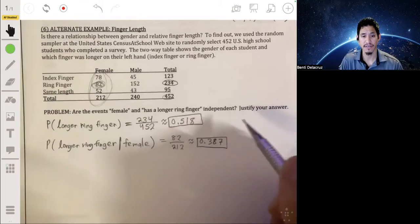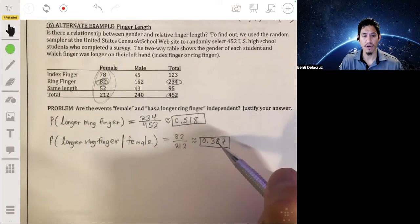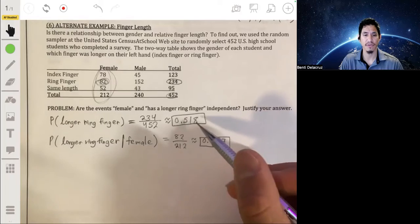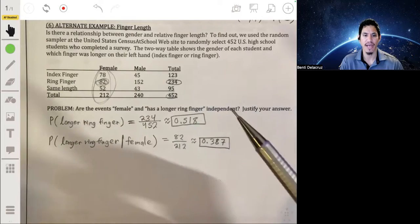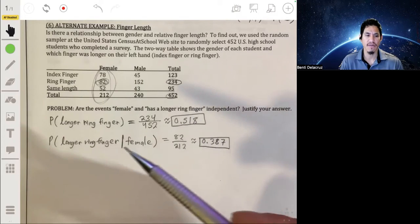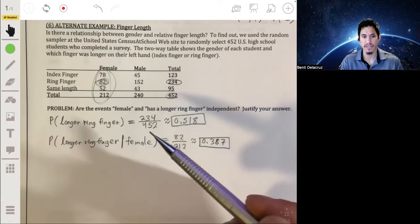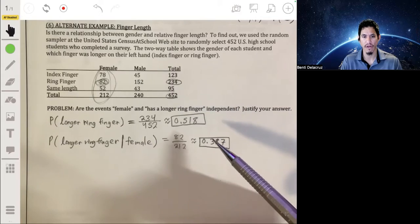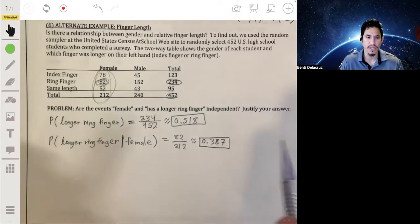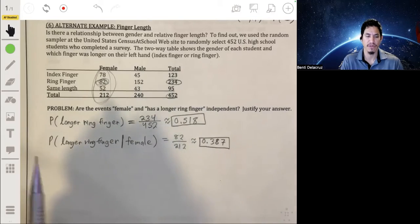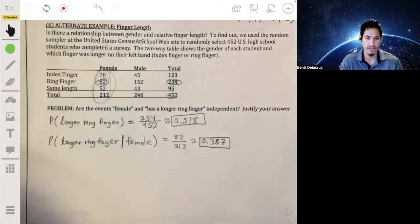Okay, so you can see there's about a 12, 13% difference between these two probabilities. So then we can say that these are not independent because it does appear that your chances of having a longer ring finger changes. It's much less if you're female than it is just in general. So again, think of it as a relationship between having a longer ring finger, between your ring finger being longer and your gender.